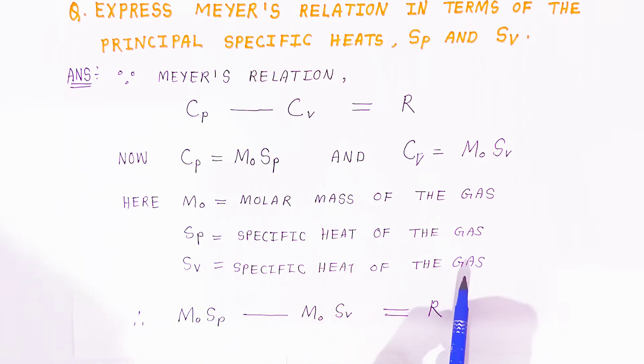Understand each one. Now put this value; you will get M0*Sp minus M0*Sv equals R.